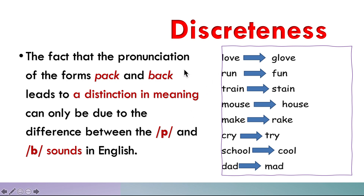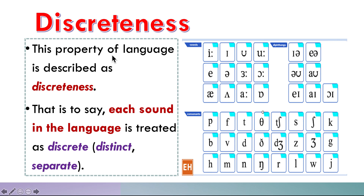A very little difference between /p/ and /b/ can produce a different meaning. For example: 'love' and 'glove' differ by just a /g/ sound; 'run' and 'fun' differ by just one sound; 'train' and 'teen' differ by just one sound. What we mean to say is that a small distinction in a particular sound can produce a distinct meaning.